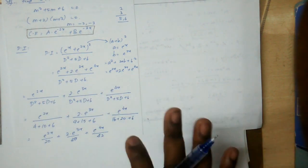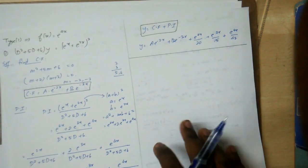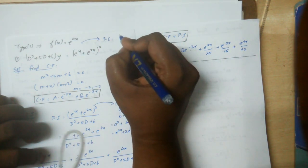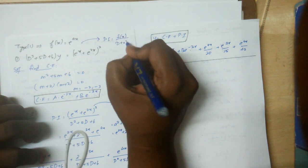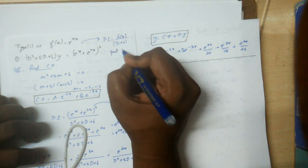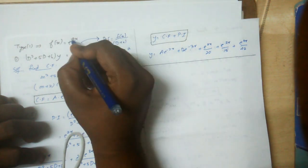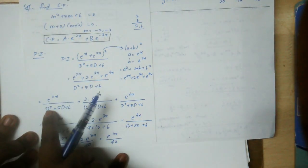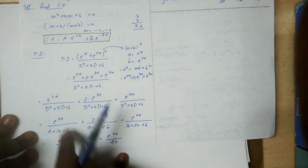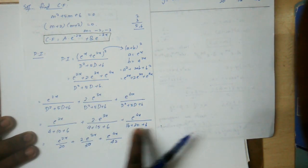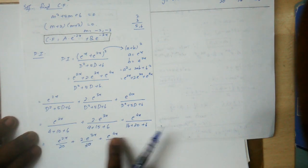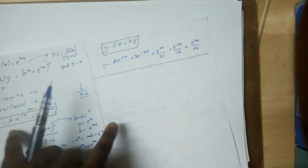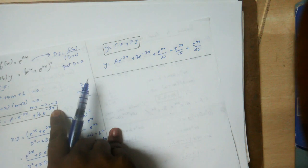To find the particular integral, substitute D = a in the operator. So D² becomes a², which is 4, plus 5×2 = 10, plus 6. When you substitute, you get the entire PI, which you then add to CF.